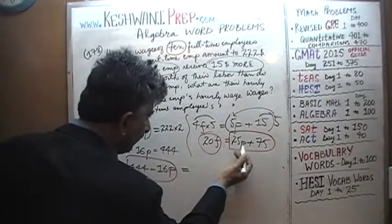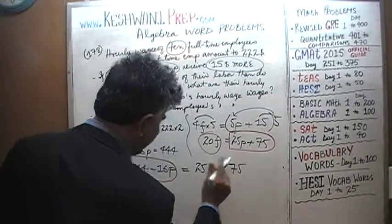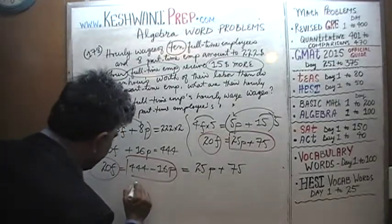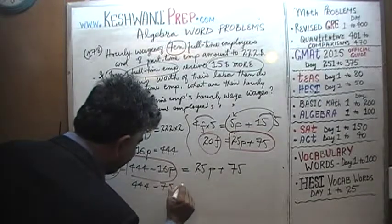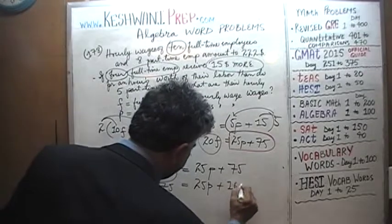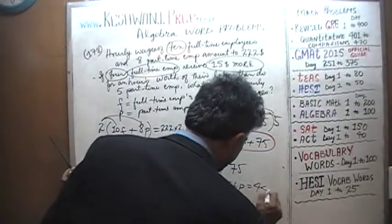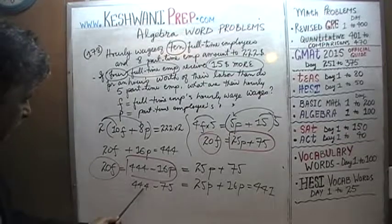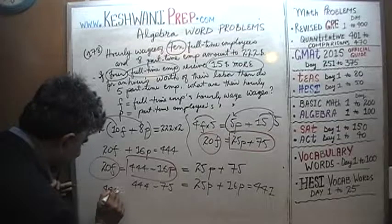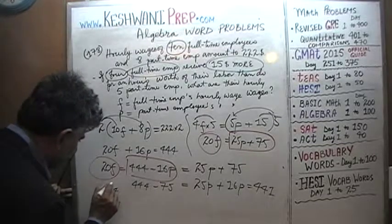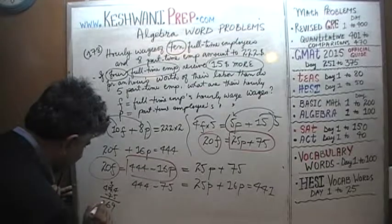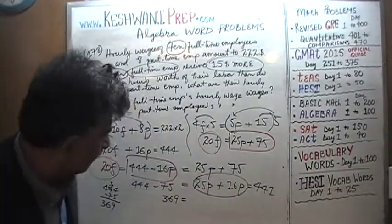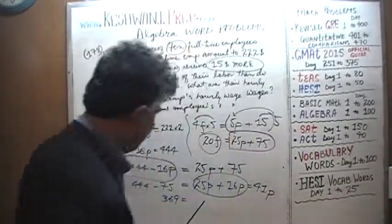We now notice that we have 20F on both sides. If 20F = 25P + 75 and 20F = 444 − 16P, then these two quantities must be equal. So: 25P + 75 = 444 − 16P. Bringing the P terms together and the constants together: 25P + 16P = 444 − 75, which gives us 41P = 369.